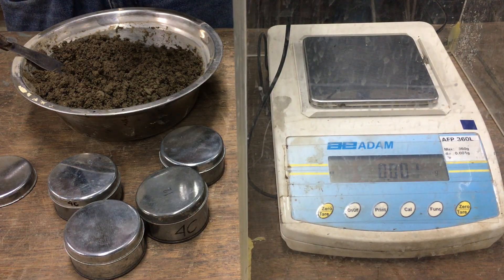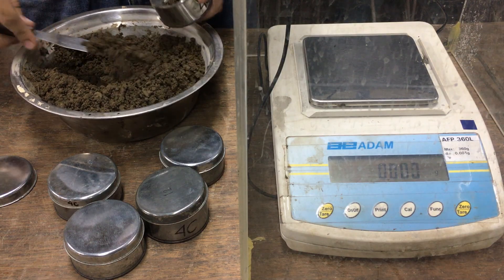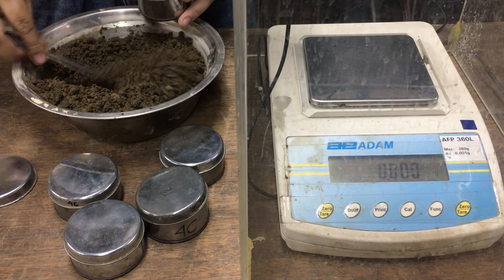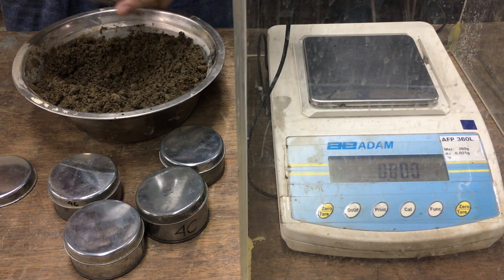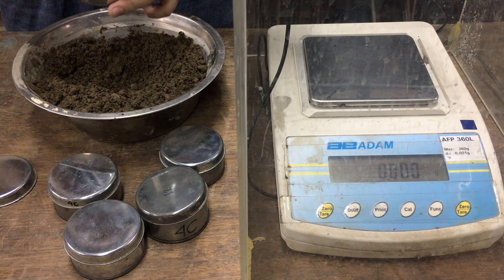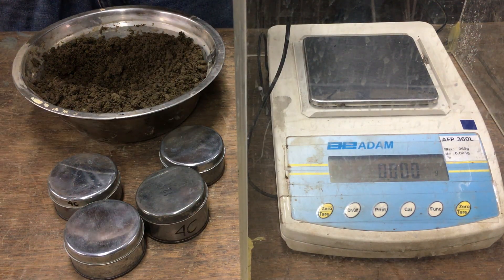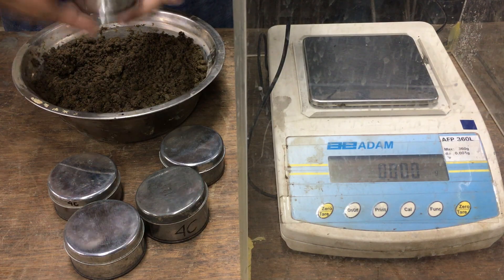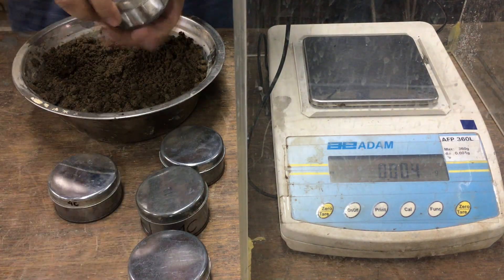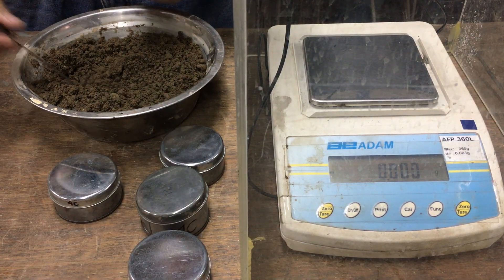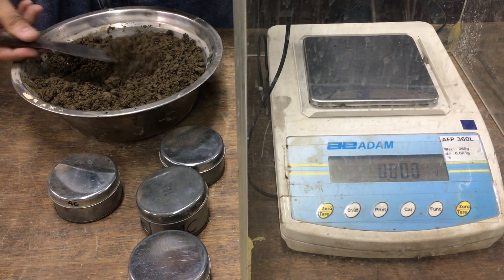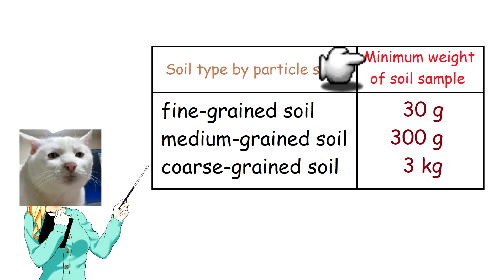Place the representative sample in the moisture can. Make sure it is crumbled and loosely placed. Cover the soil sample to prevent moisture loss if it is not going to be weighed immediately. These are the following minimum weight of sample for each type of soil by grain size.